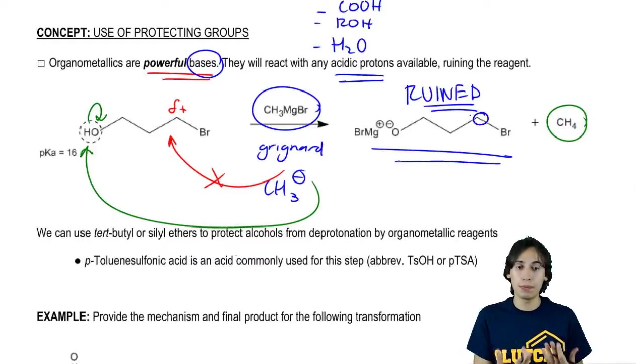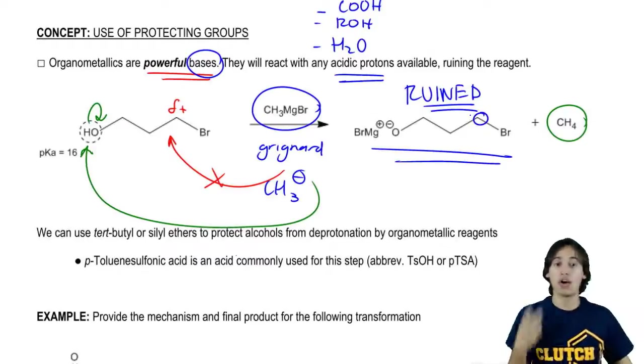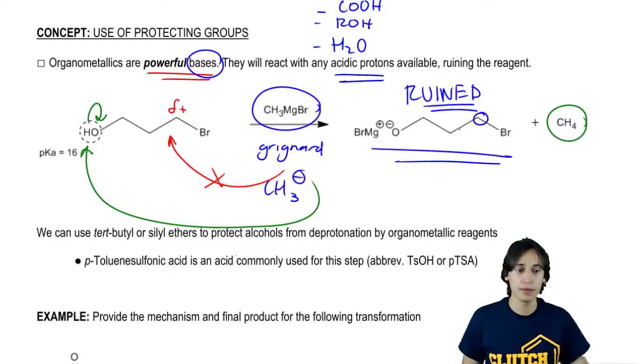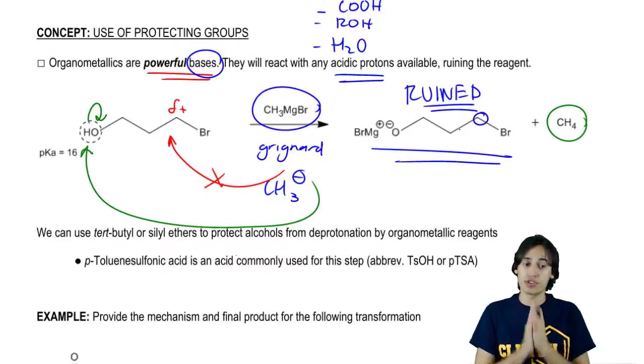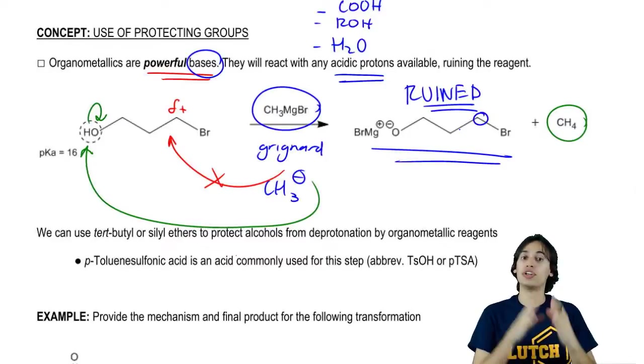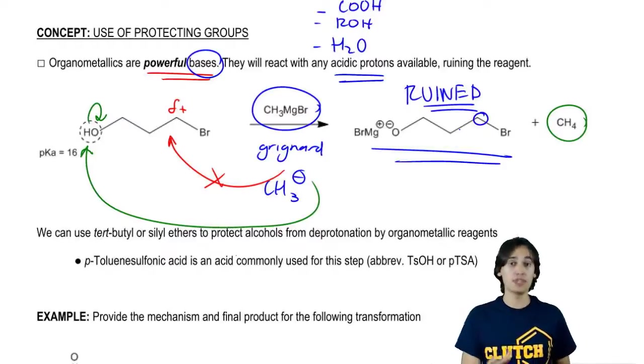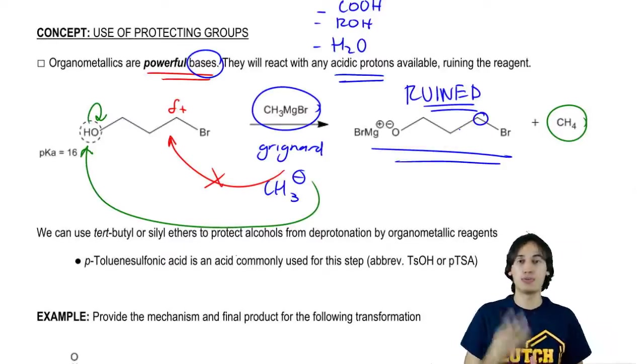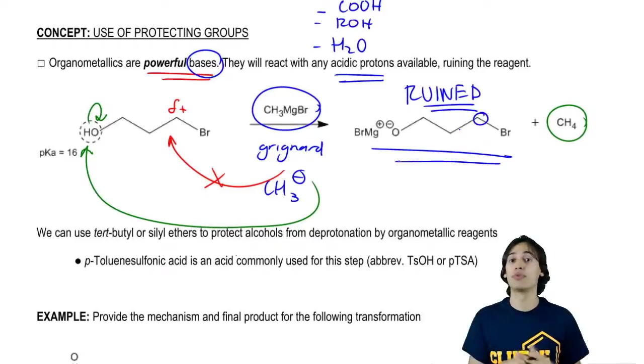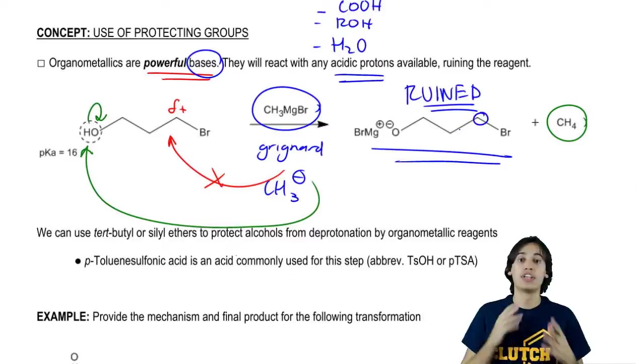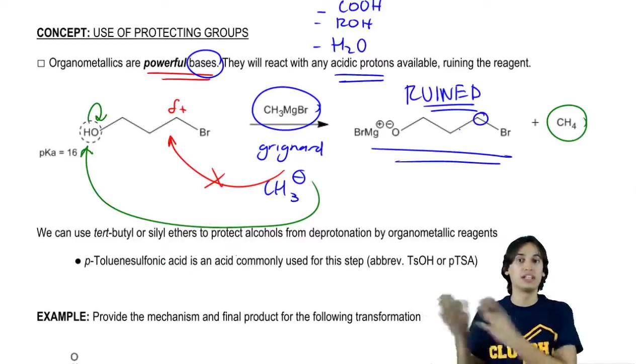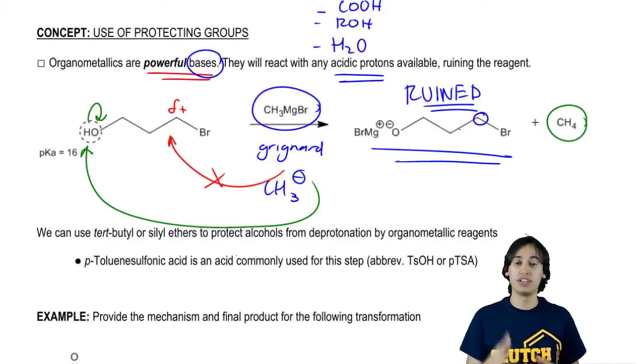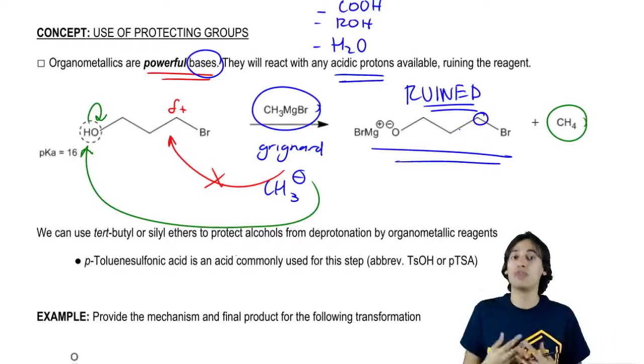So how do we prevent this from happening? It turns out that alcohols can be protected. There are some strategies that we've used before to protect alcohols. This part is going to require a little bit of prior knowledge. If you've already learned about using protecting groups for alcohols, we're going to review that right now. If you don't know how to use protecting groups for alcohols, I would recommend going back to my lessons on protecting groups in the alcohol section to get a better understanding.